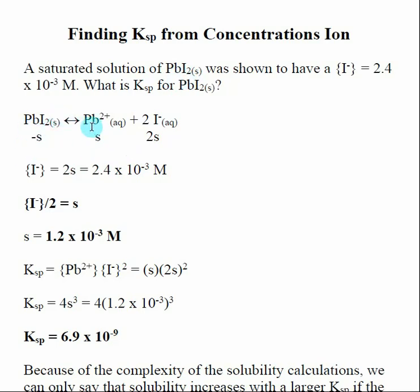Lead iodide when it breaks up is going to be making Pb²⁺ and then 2 from the subscript, 2I-. If we're going to dissociate S amount of lead iodide, we're going to make S amount of Pb²⁺ and then 2s of I-.